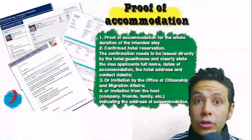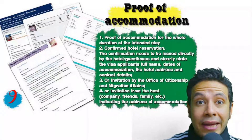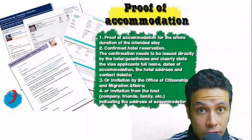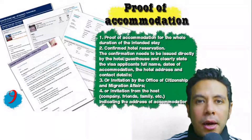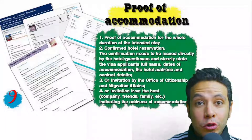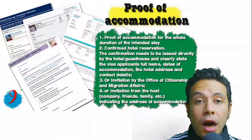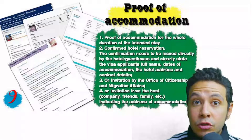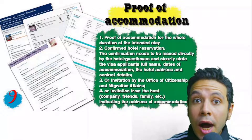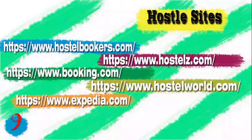You will also need proof of accommodation: a confirmed hotel reservation, an invitation from a host, or an invitation from an organization you are visiting. For a hotel or hostel, an initial booking is generally acceptable, though sometimes a confirmed booking is needed. The hotel name, address, and contact number must be included. If invited by a person, the invitation letter should be mailed to the embassy or submitted with a copy of that person's passport.